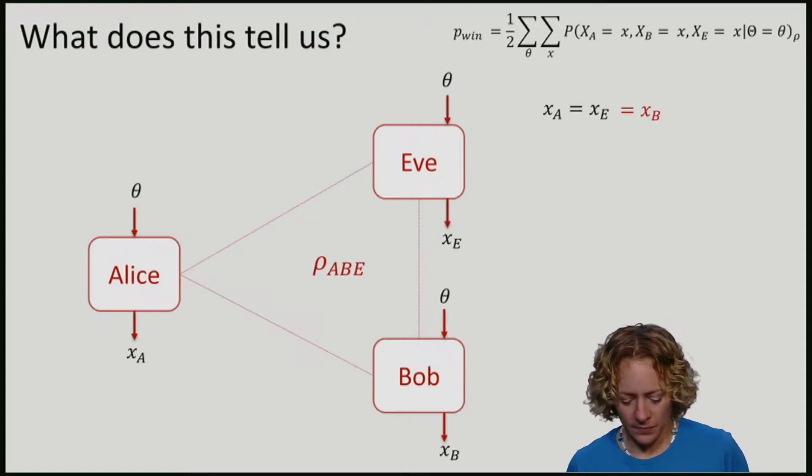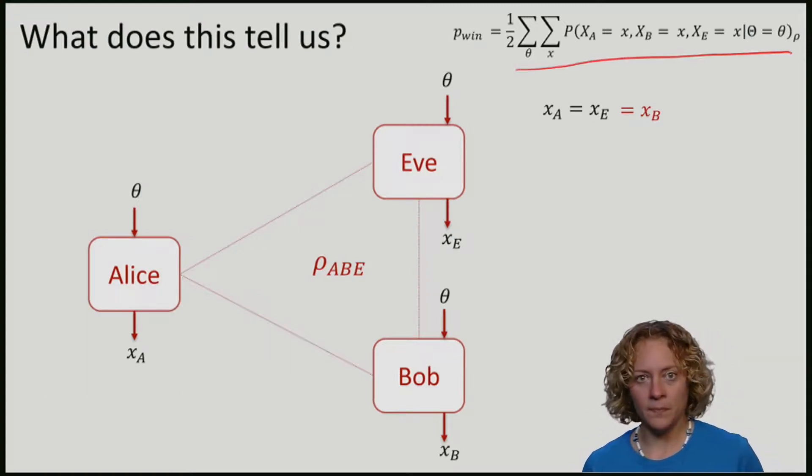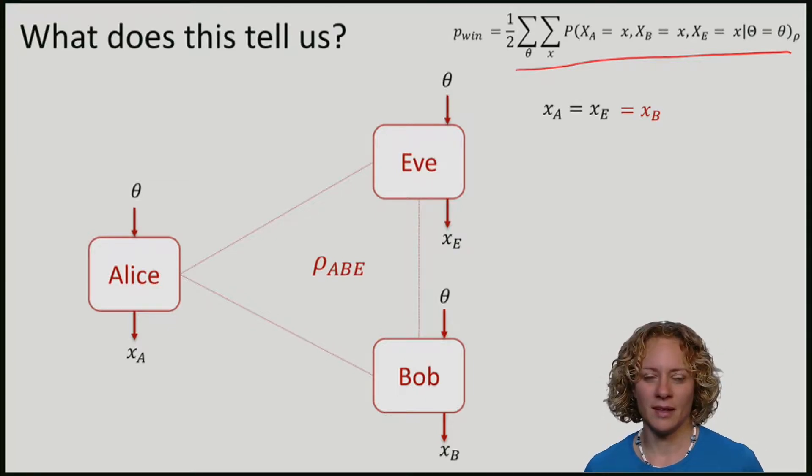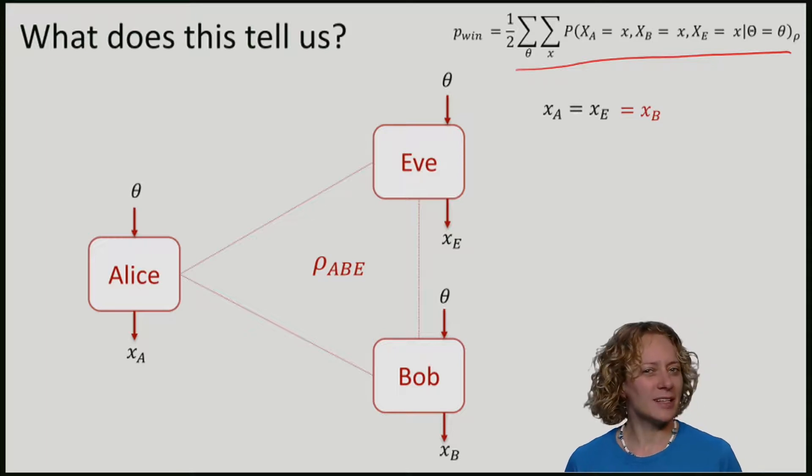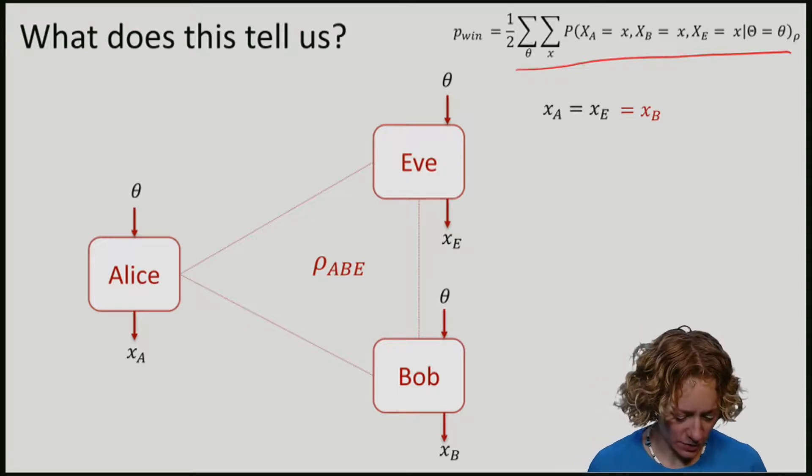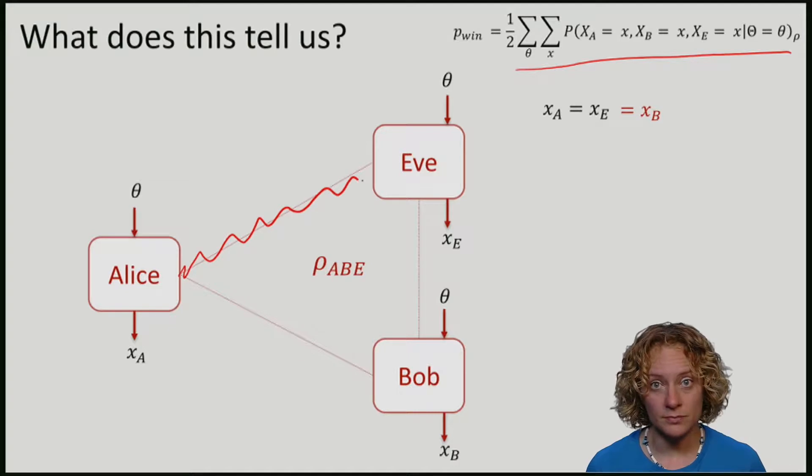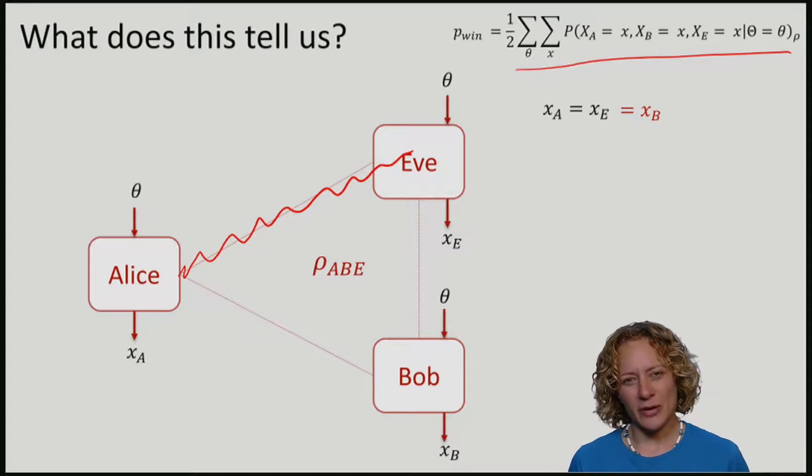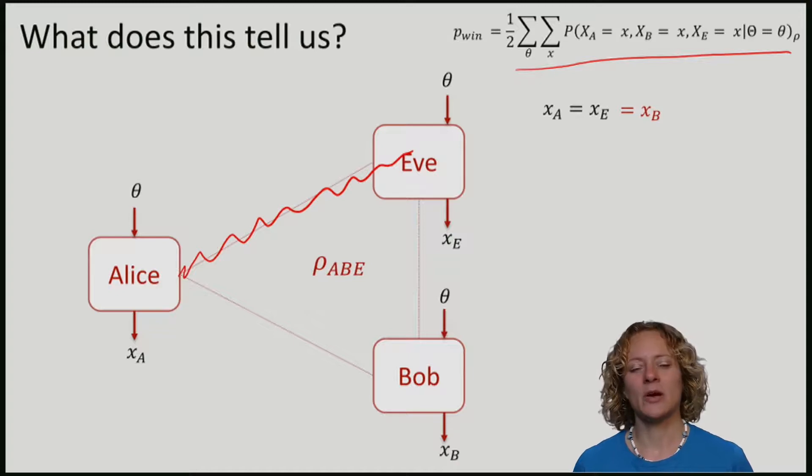Let's remember again the probability that they win, namely, that they all give the same answer. We know that if Alice and Eve are very entangled with each other, then Eve has no uncertainty. Remember, however, that we also know something else about entanglement, namely, we know that entanglement is monogamous.